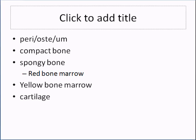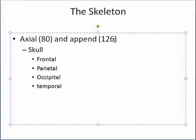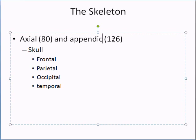The general composition of your body: every individual is a little different, but for the most part we are all composed of 80 axial bones and 126 appendicular bones. Appendicular — think appendages, that's all it is. The appendicular bones are the bones of your extremities.